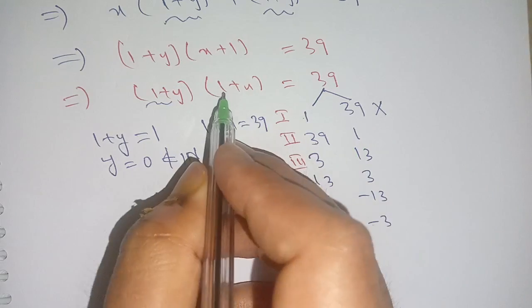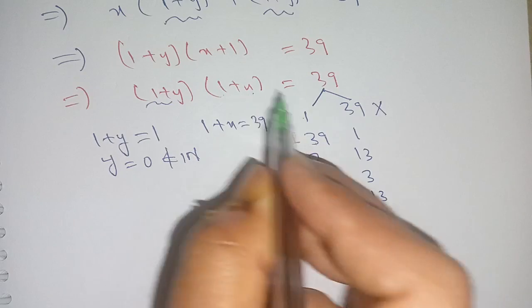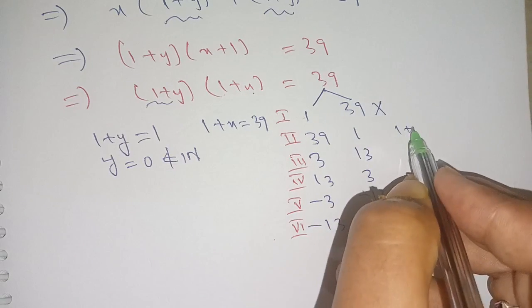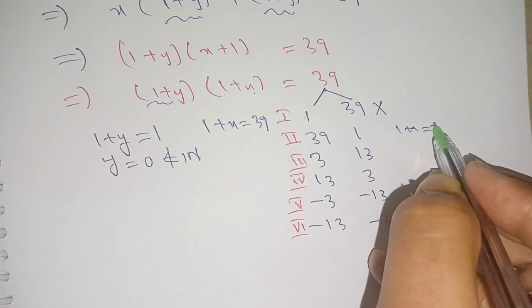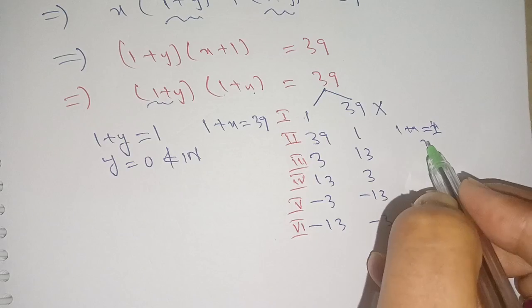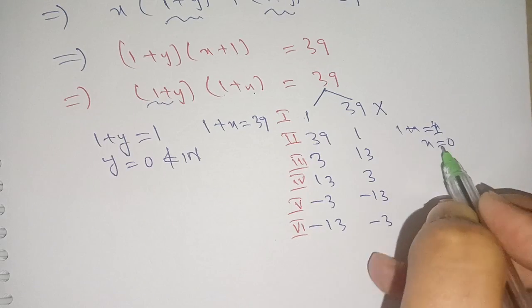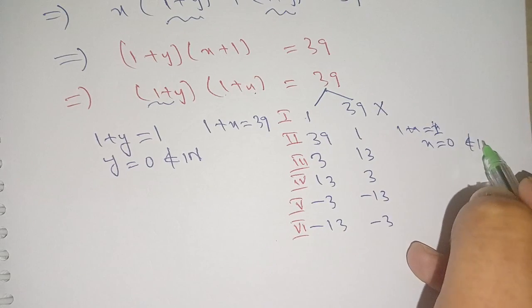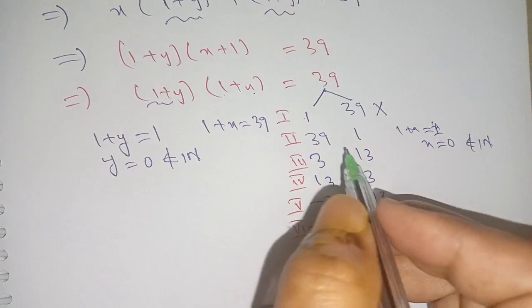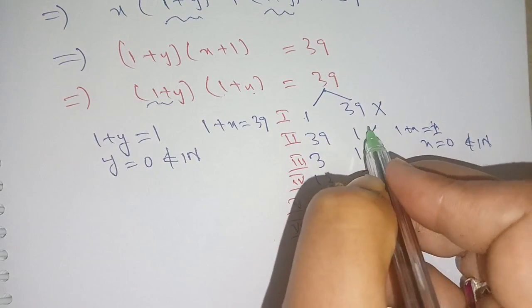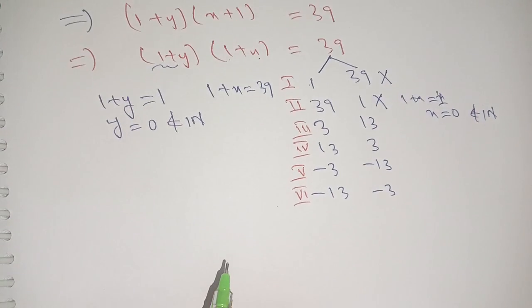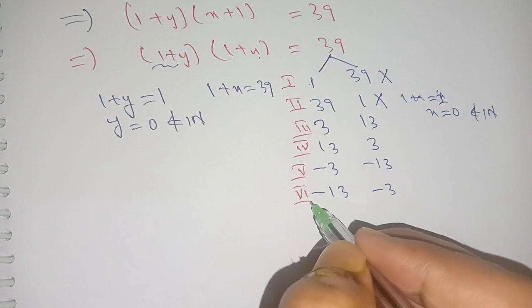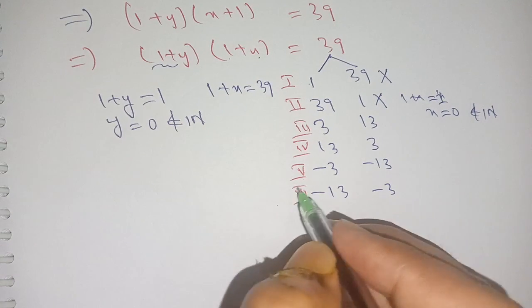For case 2, when 1 plus x is equal to 1, then x is equal to 0. This also does not belong to the natural numbers, so this case is also rejected.